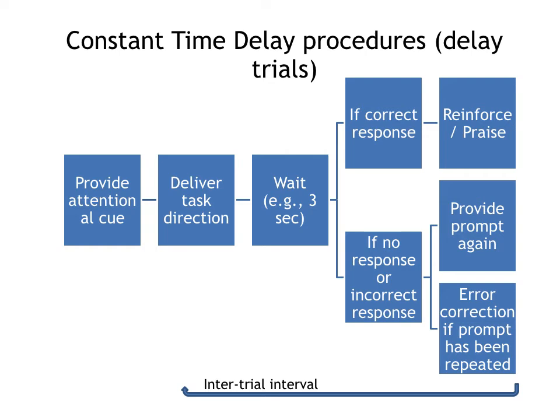After you deliver five to ten zero-second delay trials, you move to the constant time delay session. You can wait three or four seconds — whatever is socially appropriate. It's the same procedure, but you will wait for three seconds before providing the prompt. You deliver the task direction and wait for three seconds. If the student makes a correct response, you praise. If the student has no response or an incorrect response, you provide the prompt or correct the error.